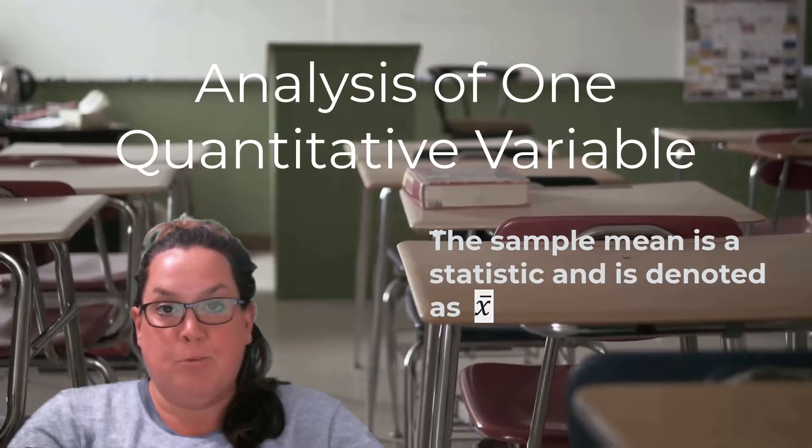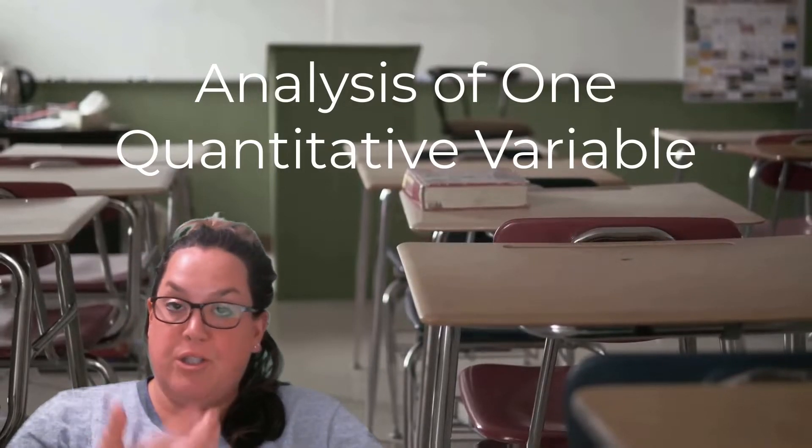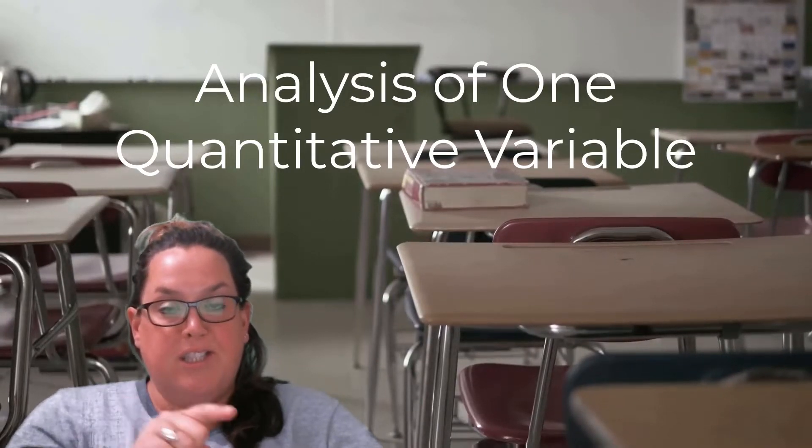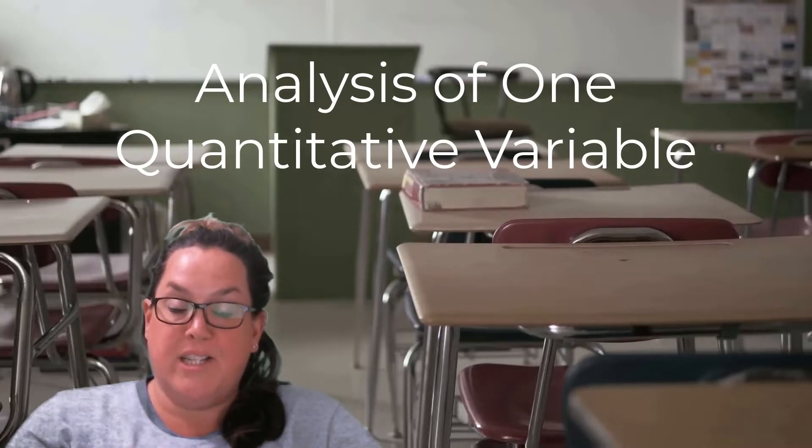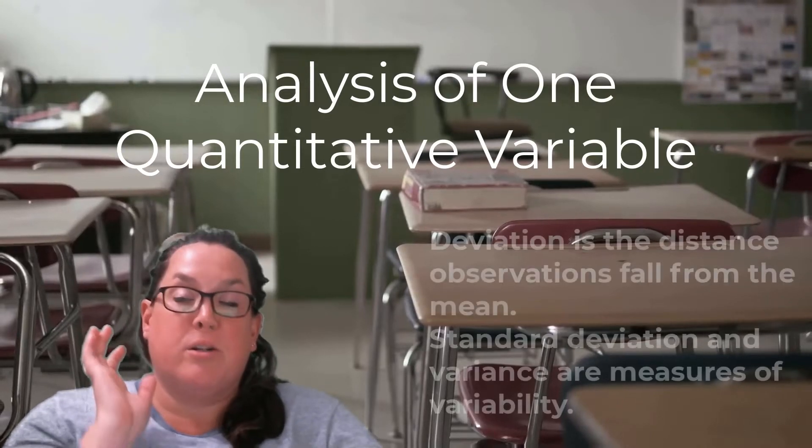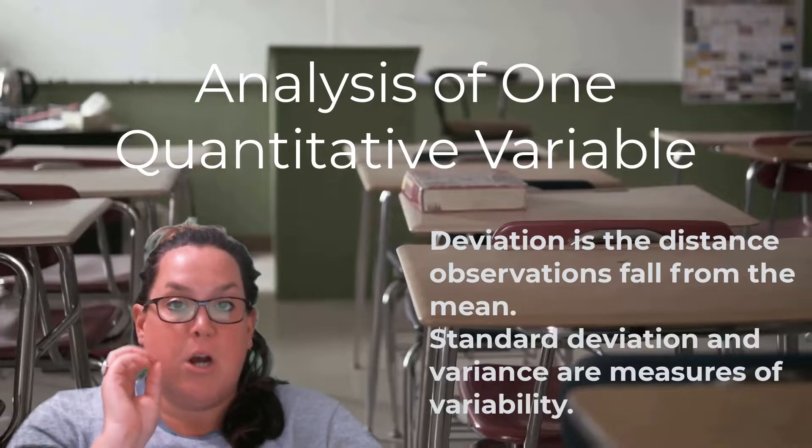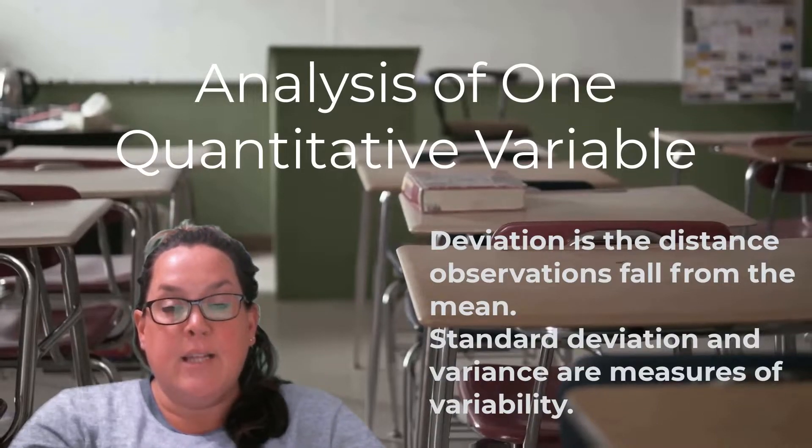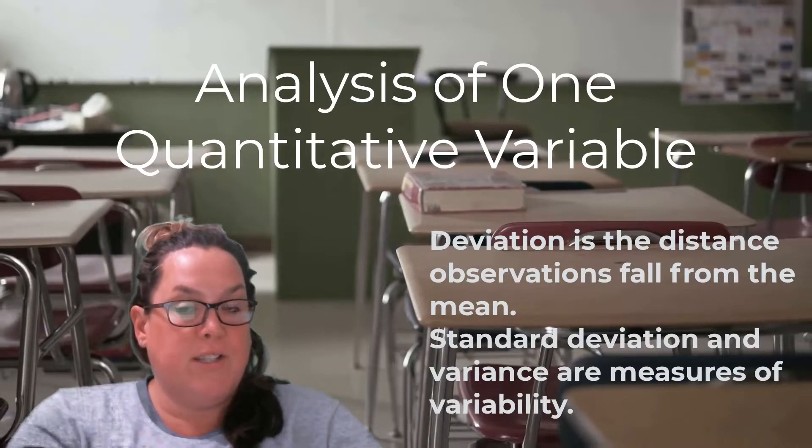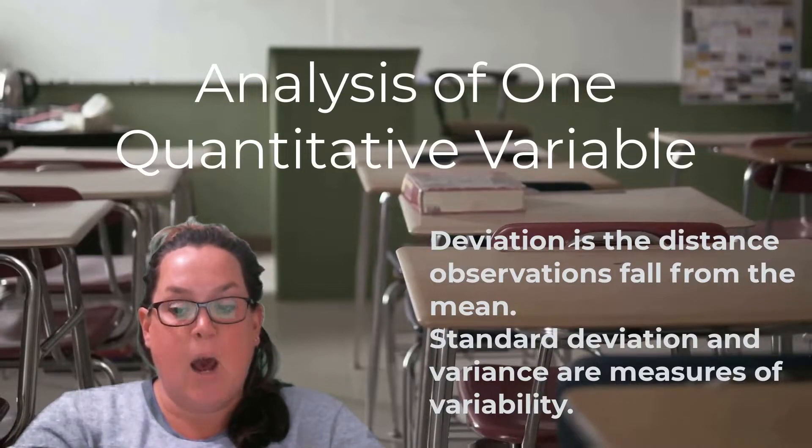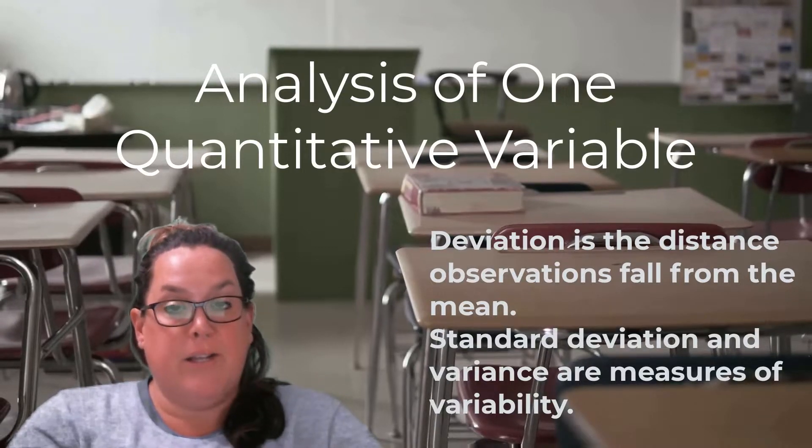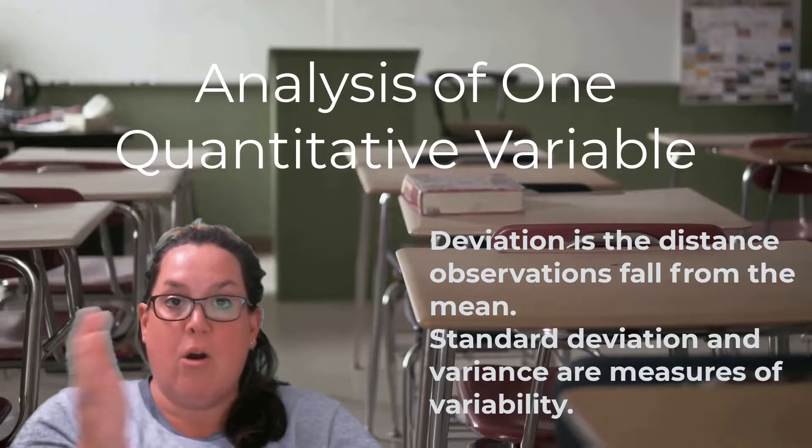However, then we went on to talk about some measurements of variability, which included deviation, which is the distance that values in a data set are from the mean. We talked about standard deviation and we talked about variance. And in those standard deviation and variance measurements, I discussed how they are not calculated the same way for a sample as they are for a population.